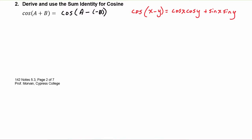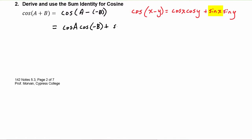Now let's apply this. We know we have to take the cosine of the first angle, so we're going to take cosine of a, and multiply it times the cosine of the second angle — cosine of negative b. Then we have to put a plus sine of the first angle, sine of a, times the sine of the second angle, sine of negative b.